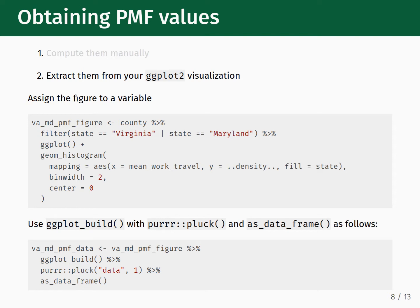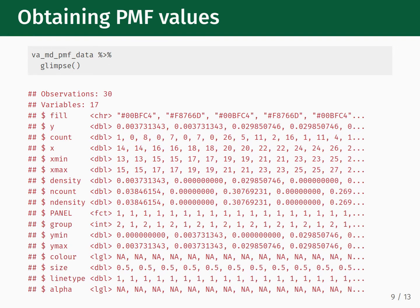Pipe the result of that into as_data_frame to ensure the output is a tidyverse-compatible data frame. Note that we assign the result of this to another variable — I've named this one va_md_pmf_data. Again, this might look complicated, but it can be viewed as a recipe. Aside from the name of the variable storing your plot, this would look the same every time. If we glimpse the result, we see that we have a table with 17 columns. All of these columns correspond to an attribute used in the ggplot2 visualization. We don't need all of them — we will just need the x column, the density column, and the group column.